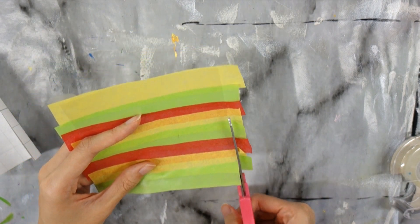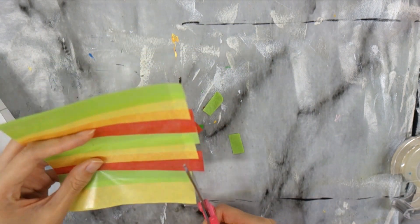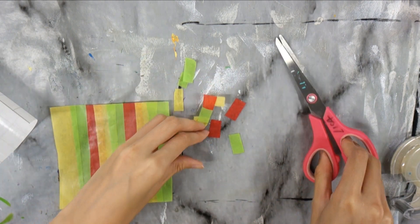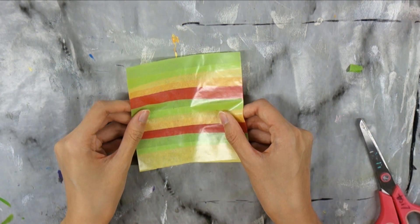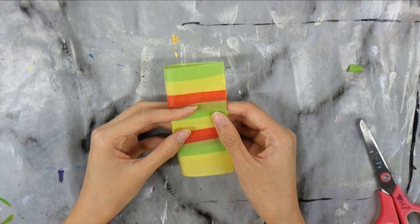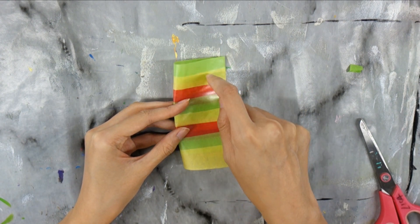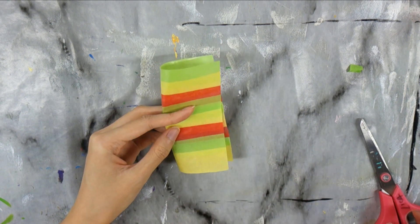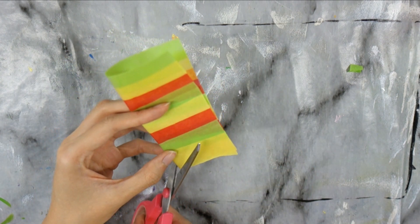Next you could trim off the extra tissue paper off the edges. To cut out a heart shape, fold the square in half. Then with your scissors, cut out a half heart shape.